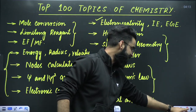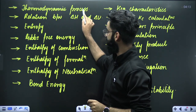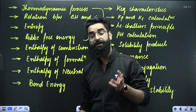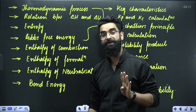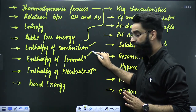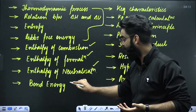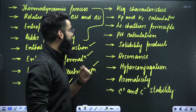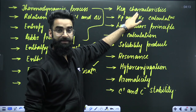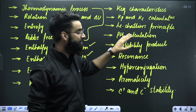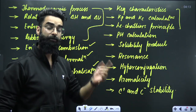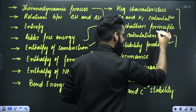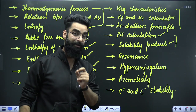Moving on to thermodynamics: starting with heat and work, then thermodynamic processes, the relation between delta H and delta U, entropy, and Gibbs free energy. In thermochemistry, focus on four topics: enthalpy of combustion, enthalpy of formation, enthalpy of neutralization, and enthalpy of reaction using bond energy data. For chemical equilibrium, the three priority topics are: characteristics of equilibrium constant, Kp and Kc calculations, and Le Chatelier's principle. For ionic equilibrium, do not skip pH calculation and solubility product.